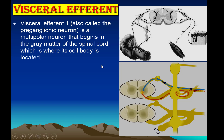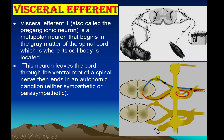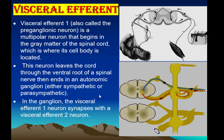This termination is in the gray matter where the cell body is located. This neuron leaves the cord through the ventral root of the spinal cord. The cell bodies of autonomic pre-ganglionic neurons are also located in the gray matter of the spinal cord, and they leave through the ventral root of the spinal nerve, ending in autonomic ganglia — either sympathetic or parasympathetic. In the ganglia, the pre-ganglionic neuron synapses with visceral efferent neuron 2.